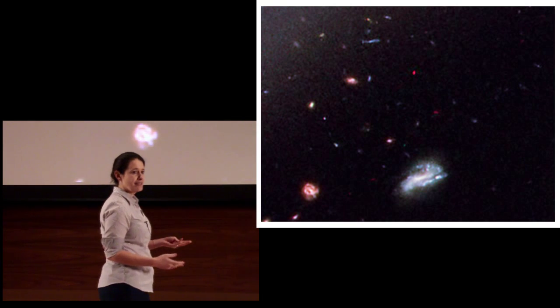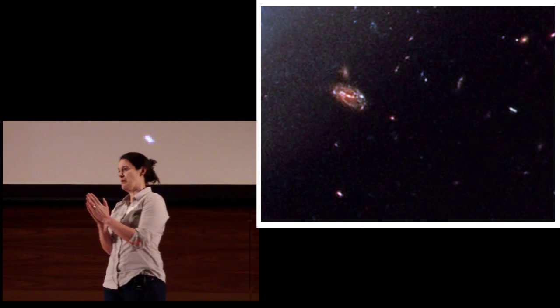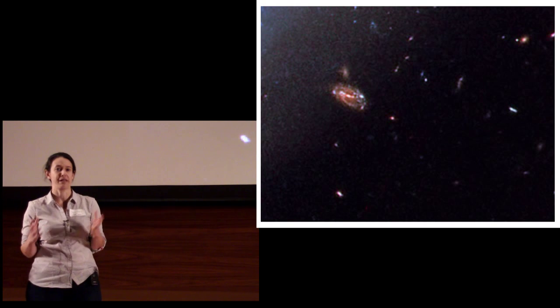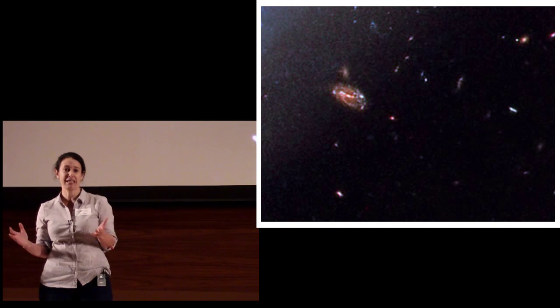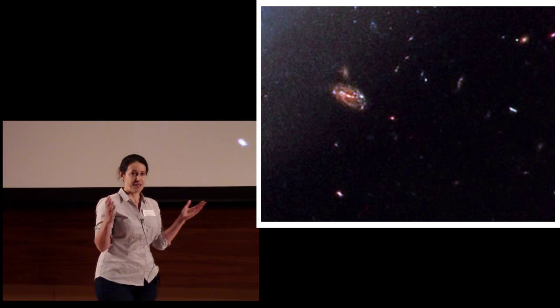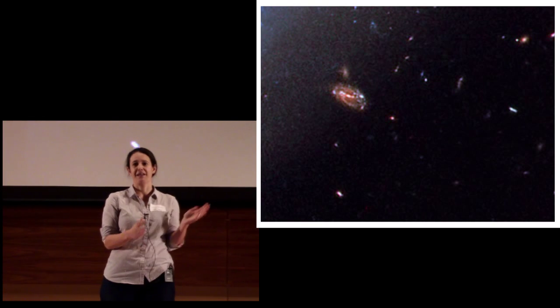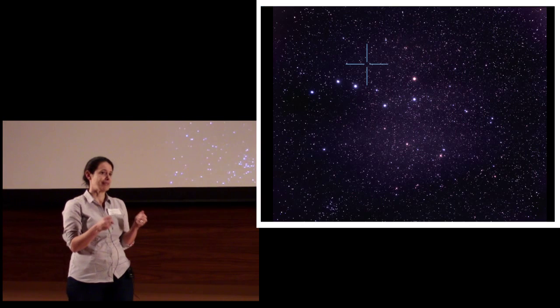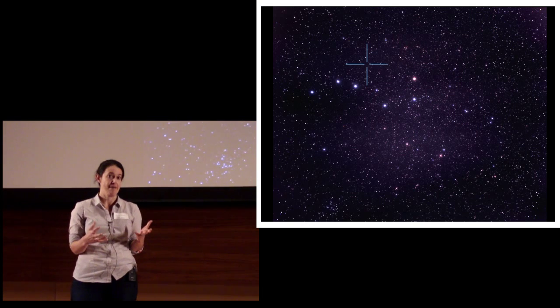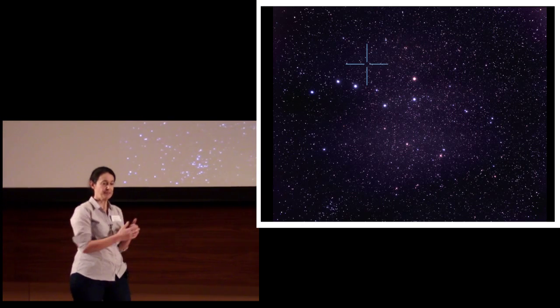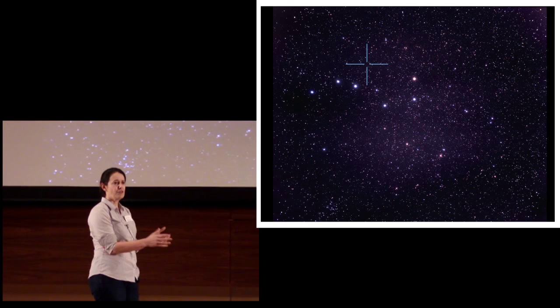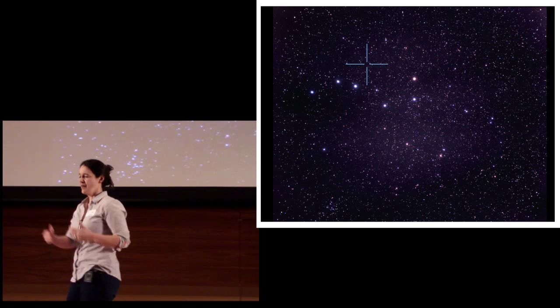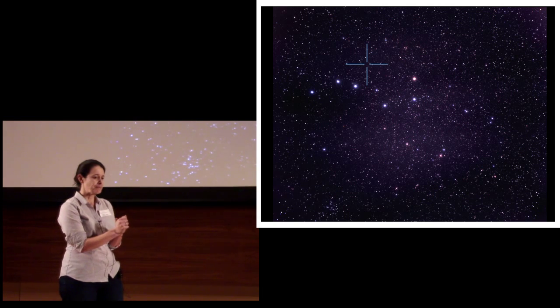Every year, the director of the Hubble Space Telescope gets to use a portion of the Space Telescope time to observe whatever they want. So he or she can point the telescope at my grandmother's left foot if that was scientifically interesting. In 1996, they decided to point the telescope at a blank piece of sky, somewhere near Ursa Major, and look for a very long time and see what's out there if you really use this telescope for its full capacity.